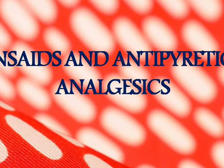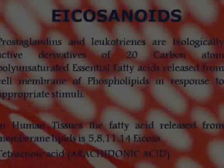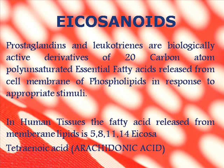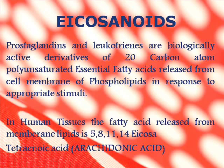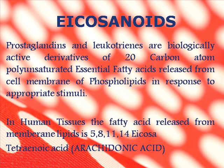Before going in depth regarding the topic, we are going to focus on eicosanoids, which are postulated to be the major cause of inflammation, pain, as well as elevated body temperature. Prostaglandins, leukotrienes, and thromboxins are biologically active derivatives of 20-carbon polyunsaturated essential fatty acids released from cell membrane phospholipids.